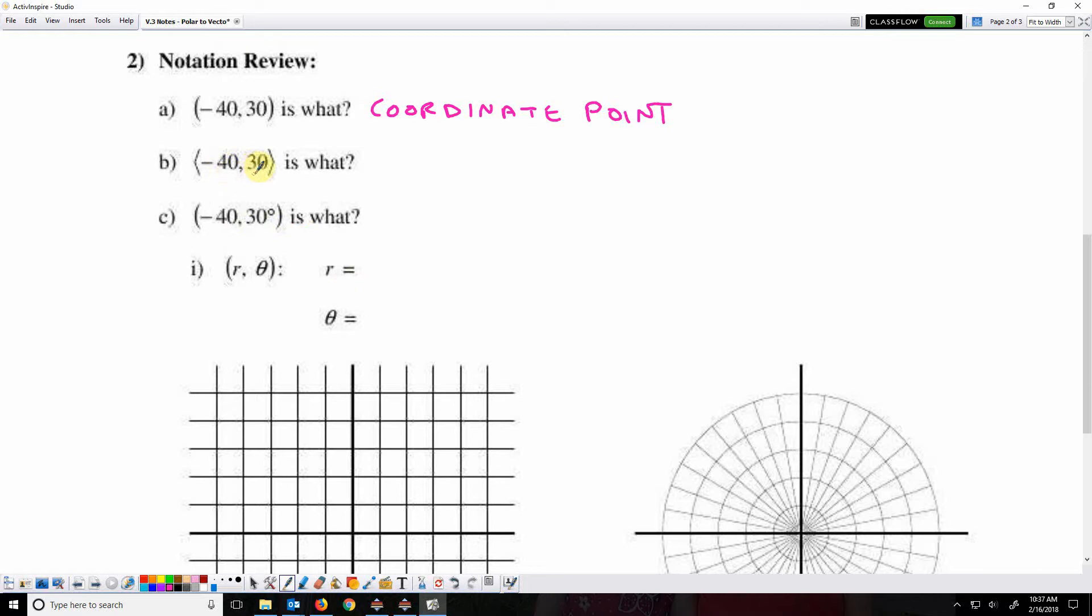When we see the same numbers but the parentheses are a little pointy now, those are vector components.